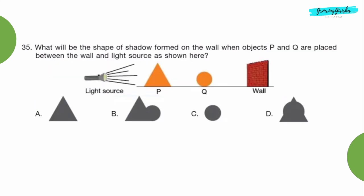Question 35: What will be the shape of shadow formed on the wall when objects P and Q are placed between the wall and light source as shown here? Option A, triangle.